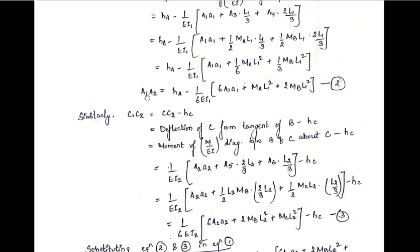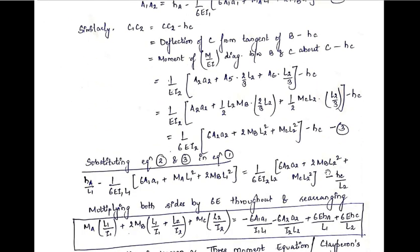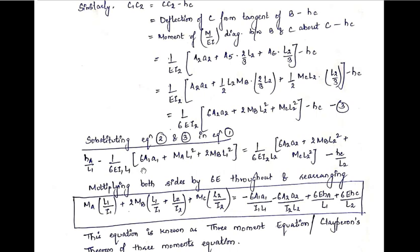Now we have expressions for a1a2 and c1c2 from equations 2 and 3. Substituting into equation 1, dividing equation 2 by l1 and equation 3 by l2, multiplying both sides by 6E throughout, and rearranging, we obtain the final equation — known as the three-moment equation or Clapeyron's theorem of three moments. This equation will be used to solve problems in the next videos.